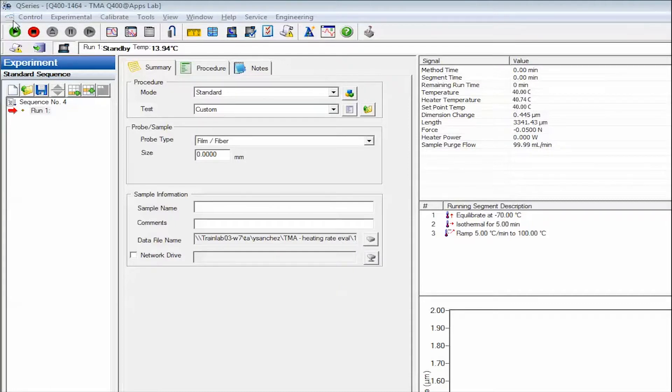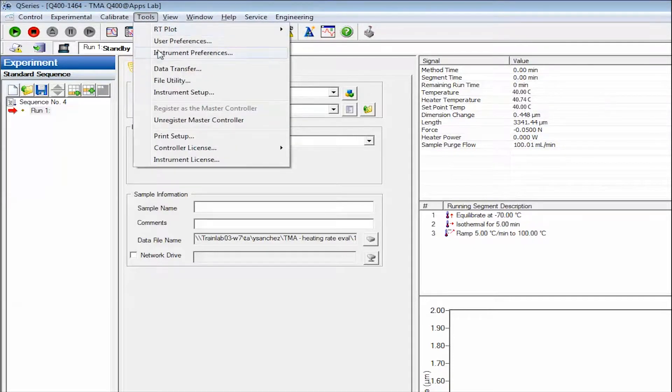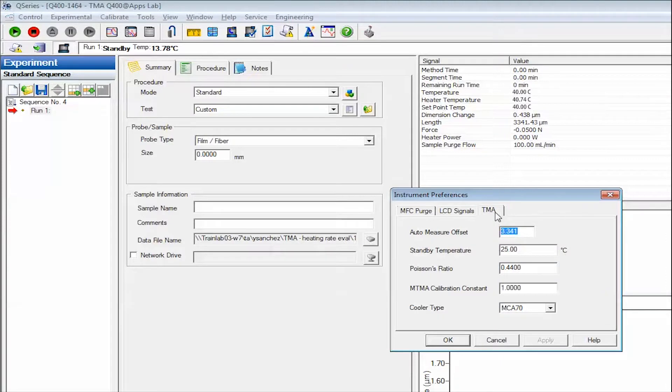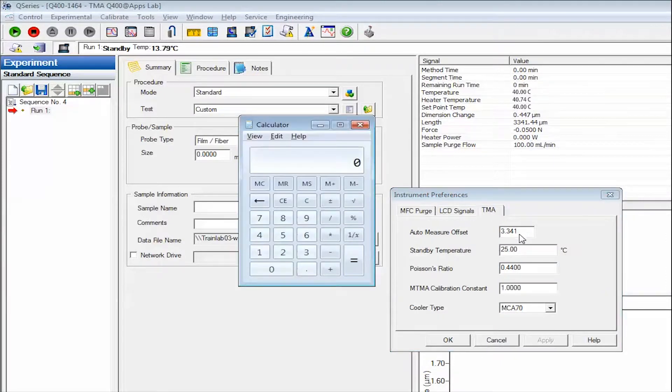Determine the Auto measure offset as follows. On the instrument control software, select Tools, Instrument Preferences, TMA, and record the value listed as AutoMeasure Offset.